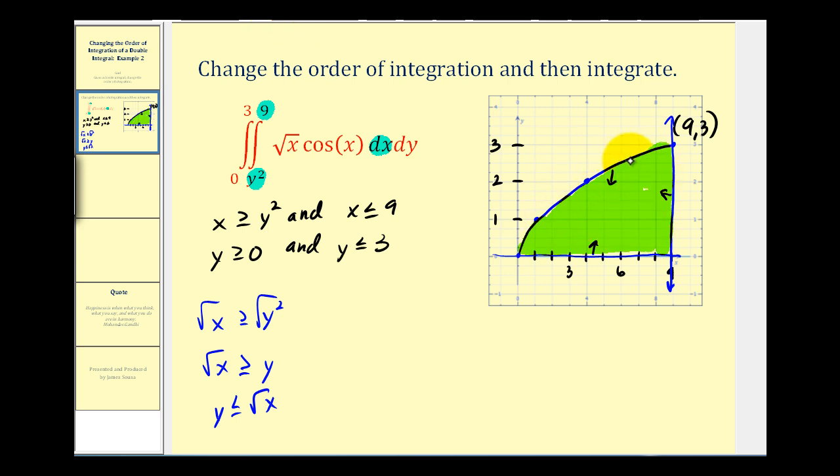Let's go ahead and label the equations on our graph. So we have y equals the square root of x, or we could express it as x equals y squared. Of course, this was x equals nine. This was y equals zero. And now let's go ahead and see if we can switch the order of integration.